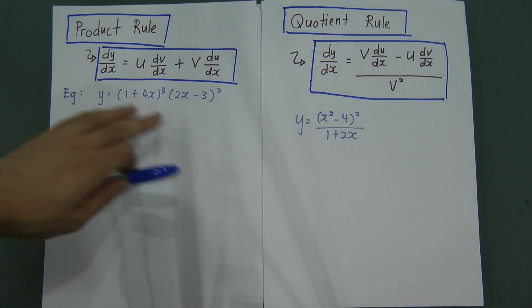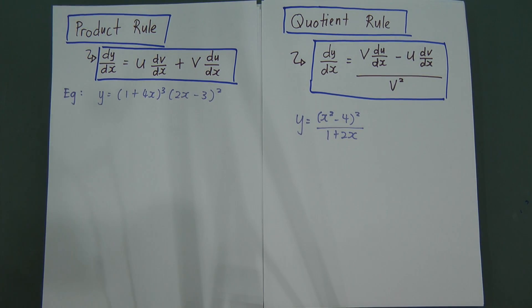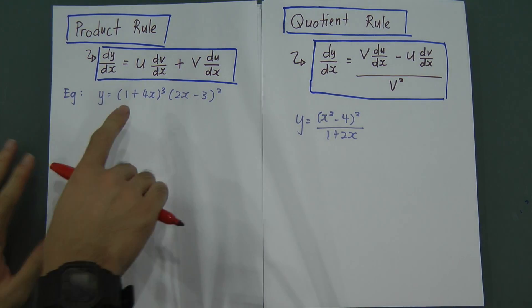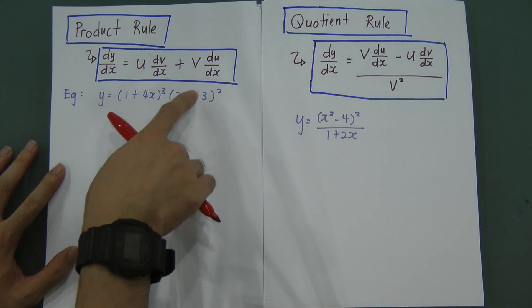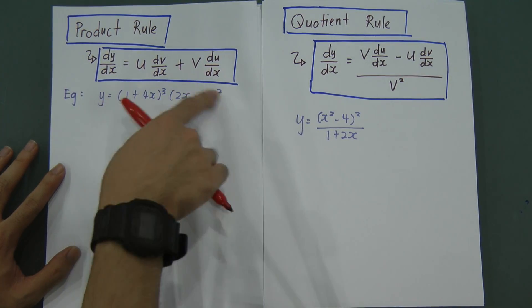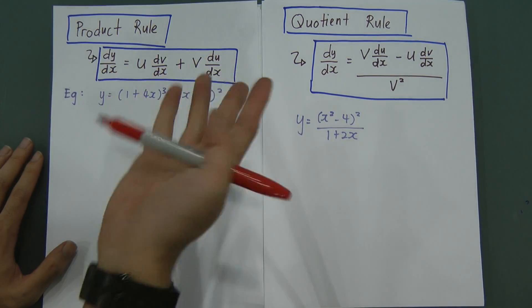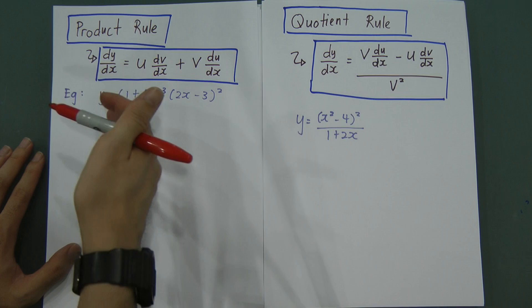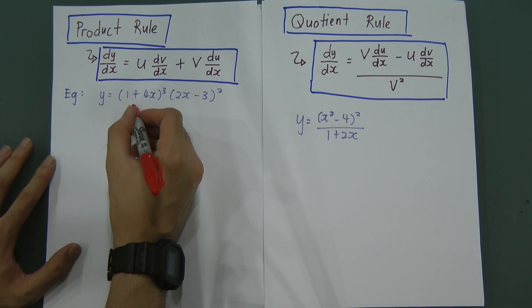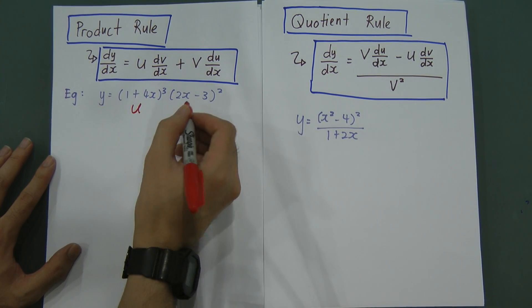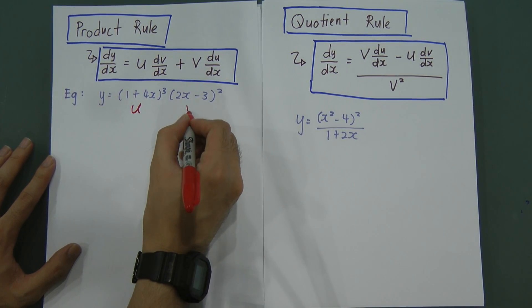When you see an equation like this, what you need to do is determine the first function and let it become U, and let the second one become V. The formula pattern goes U, V, U, V — so I let this one be U and this one become V.